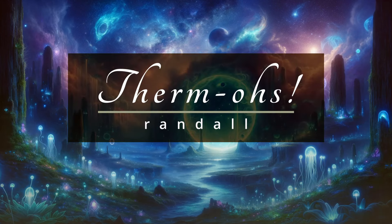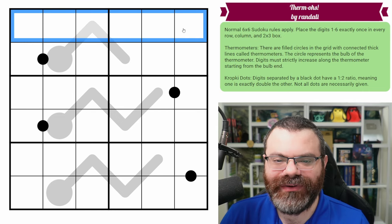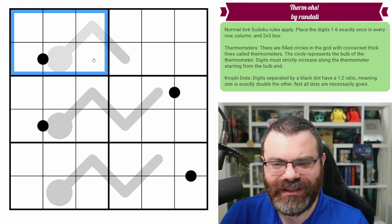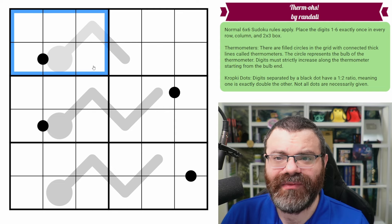Hello, let's continue our Sudoku adventure with Thermos by Randall. We have normal six by six Sudoku rules, meaning in every row, every column, and every two by three box, we are placing the digits one to six exactly once each.